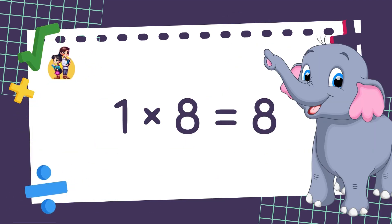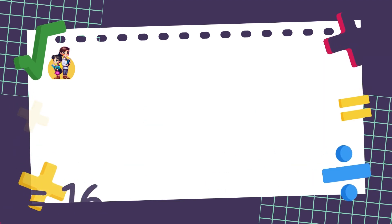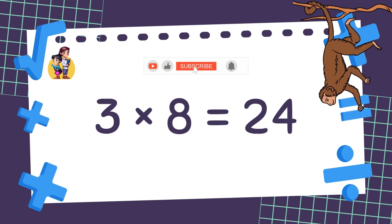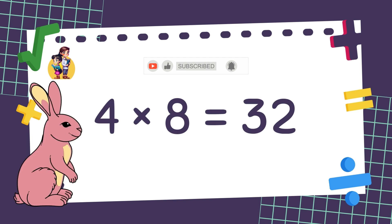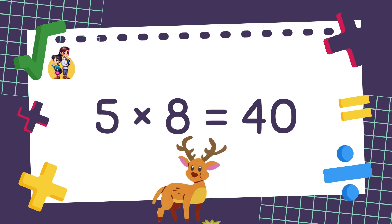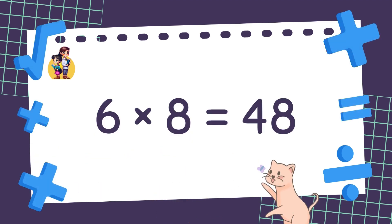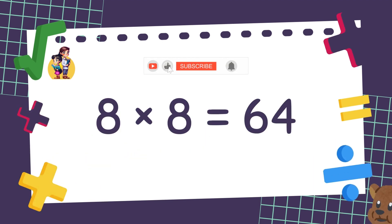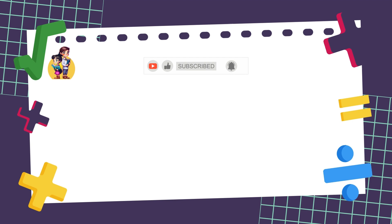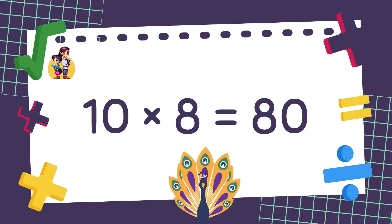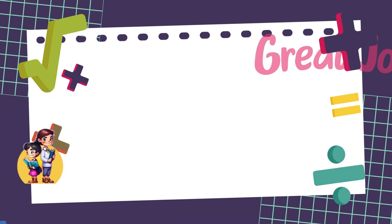1 x 8 is equal to 8. 2 x 8 is equal to 16. 3 x 8 is equal to 24. 4 x 8 is equal to 32. 5 x 8 is equal to 40. 6 x 8 is equal to 48. 7 x 8 is equal to 56. 8 x 8 is equal to 64. 9 x 8 is equal to 72. 10 x 8 is equal to 80. Well done!